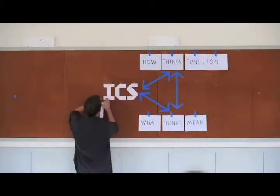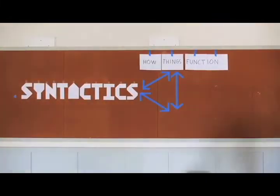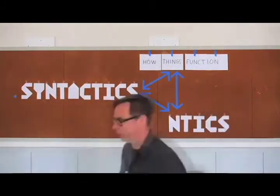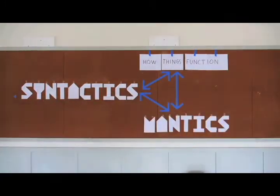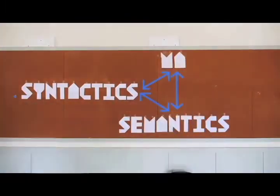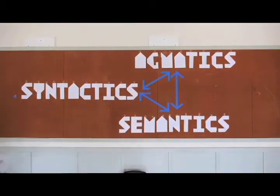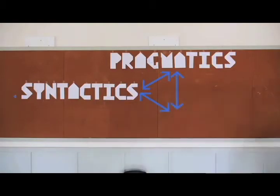In semiotic terminology, the triad I just described would be labeled this way: syntactics, which looks at formal issues and the relationships between signs; semantics, which looks at meaning and the relationships between signs and the things to which they refer; and pragmatics, which looks at function and the relationships between signs and those who use them.